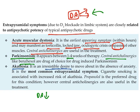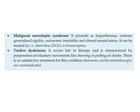The next extrapyramidal effect is akathisia — restlessness or an irresistible desire to move about in the absence of anxiety. It is the most common extrapyramidal symptom. Cigarette smoking is associated with increased risk of akathisia, and propranolol, a beta blocker, can be used to treat it.